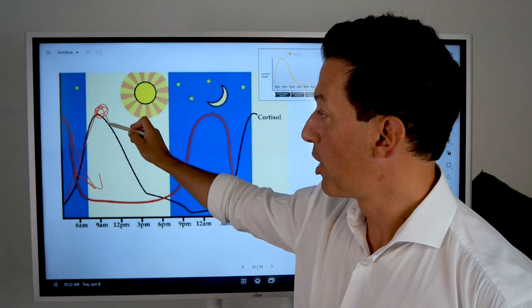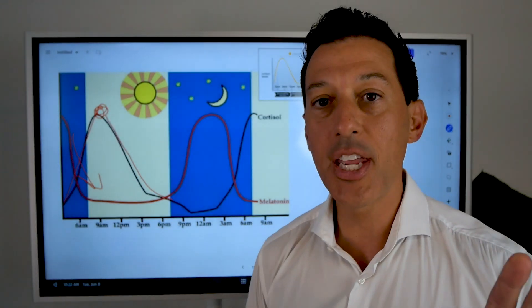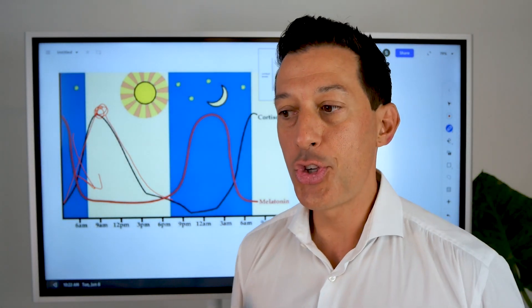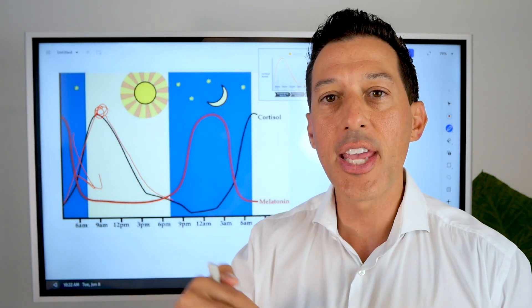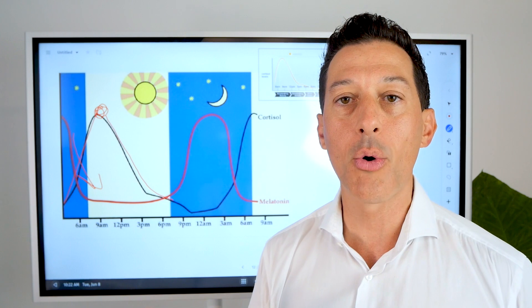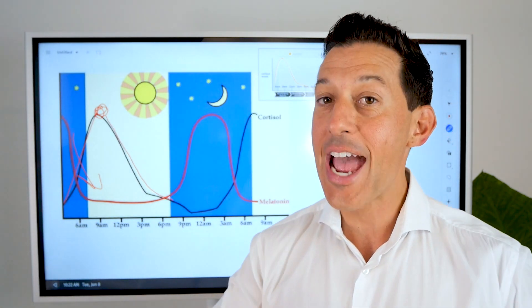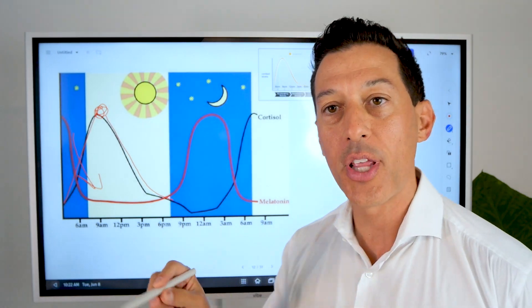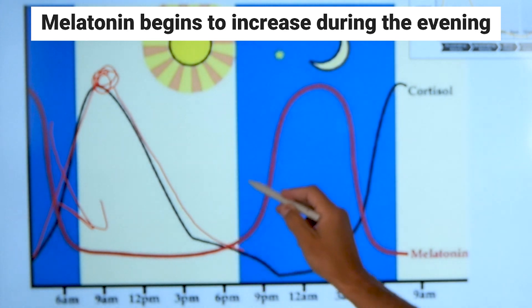You'll see though, cortisol begins to fall during the day. This is very interesting because humans get that big surge in the morning and then just gradually throughout the day as the sun begins to set as well, our cortisol begins to go lower. Well, lo and behold, when cortisol begins to drop naturally, melatonin then begins to increase. That's the red line right here. That's melatonin.